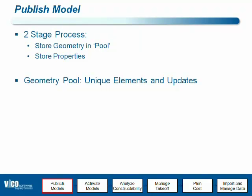Publishing models is a two-stage process. We've all seen the dialogue in Revit, in Constructor, and in Tecla, presented through the add-ons in Revit, as a menu item in Constructor, and through components in Tecla. You select a project and then start the publishing process. After you click OK and select a project and say you want to create a new file, a two-stage process starts.